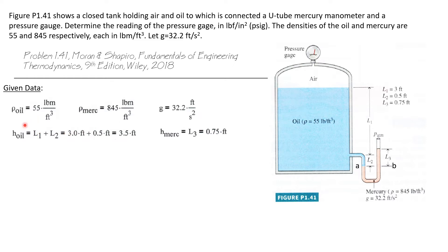Here is the given data: the density of oil, the density of mercury, and the acceleration of gravity. We also need the height of each fluid. The height of the oil is L1 plus L2, which is three feet plus half a foot, giving 3.5 feet. The height of the mercury is L3 above the oil at the bottom, which is three-quarters of a foot.